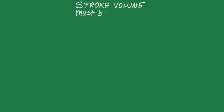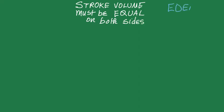The stroke volume must be equal on both sides of the heart. This means that the ventricular output from the right side must be equal to the ventricular output from the left side. Usually, stroke volume in a normal situation is 70 milliliters, so it has to be equal on both sides. If it is not equal, then the result is edema or fluid accumulation.